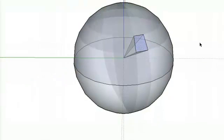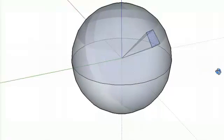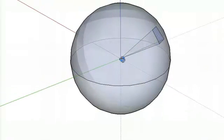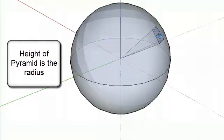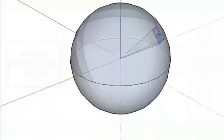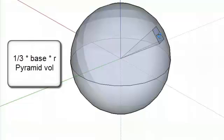This pyramid here has got a height that goes from the center here of the sphere all the way to the edge of the sphere. So that would be a radius, and the height of the pyramid is the radius. So one-third times the base of the pyramid times the radius would get me the volume of that pyramid.